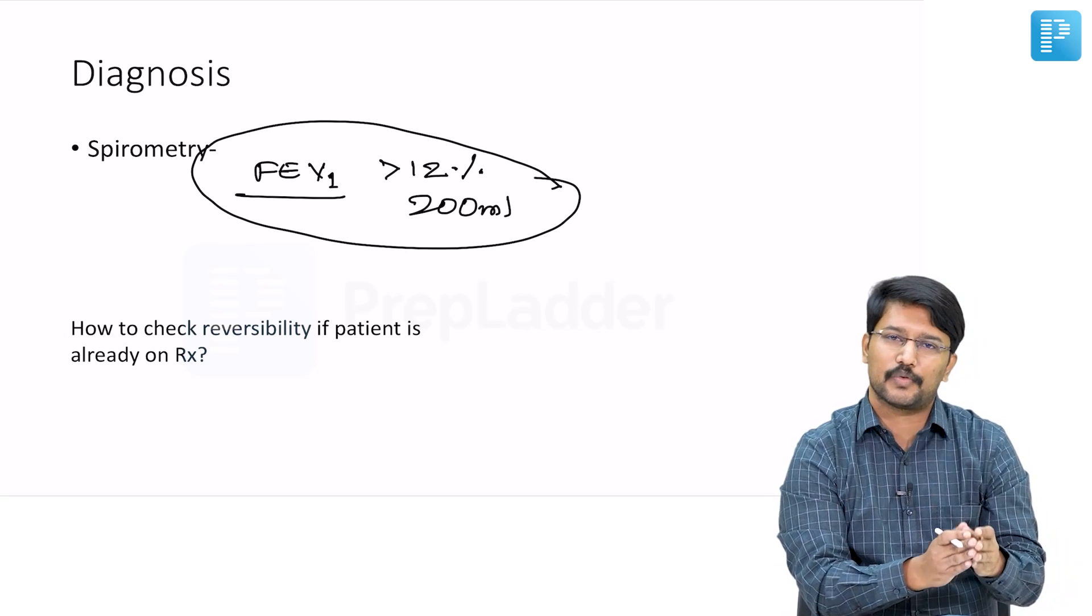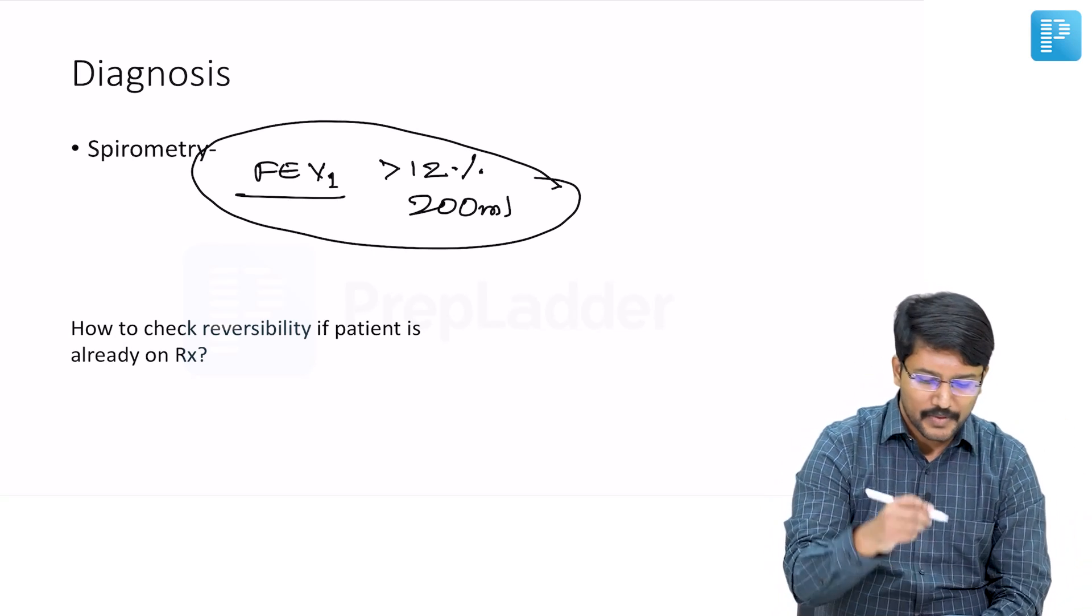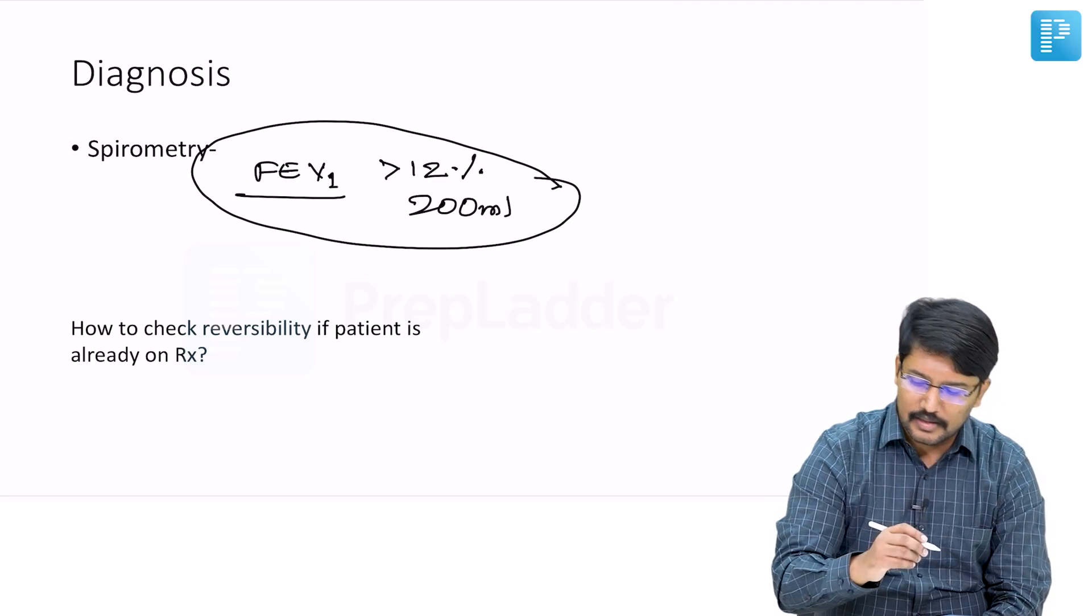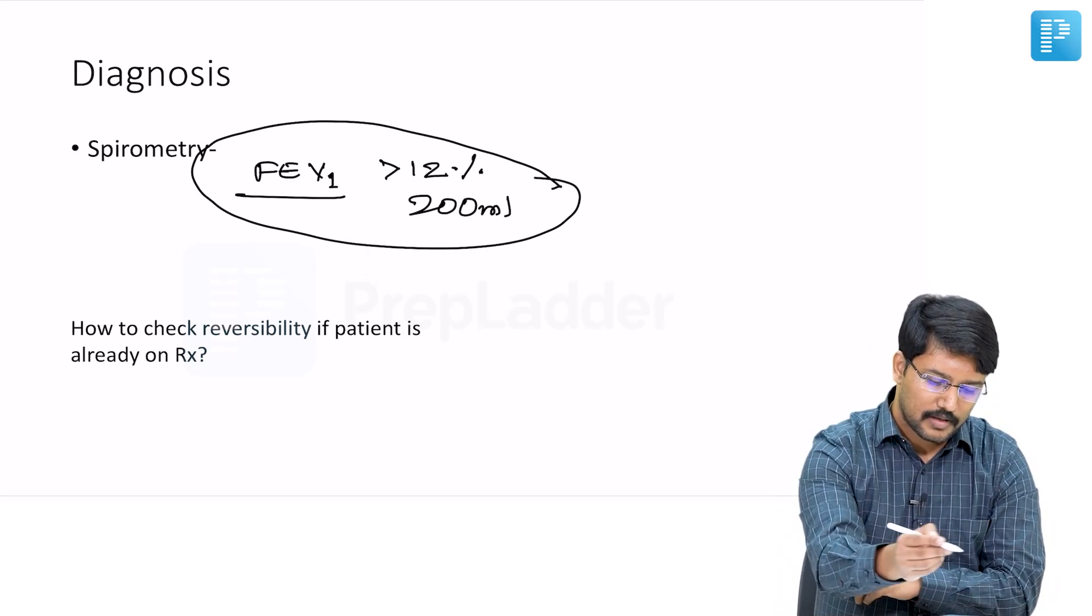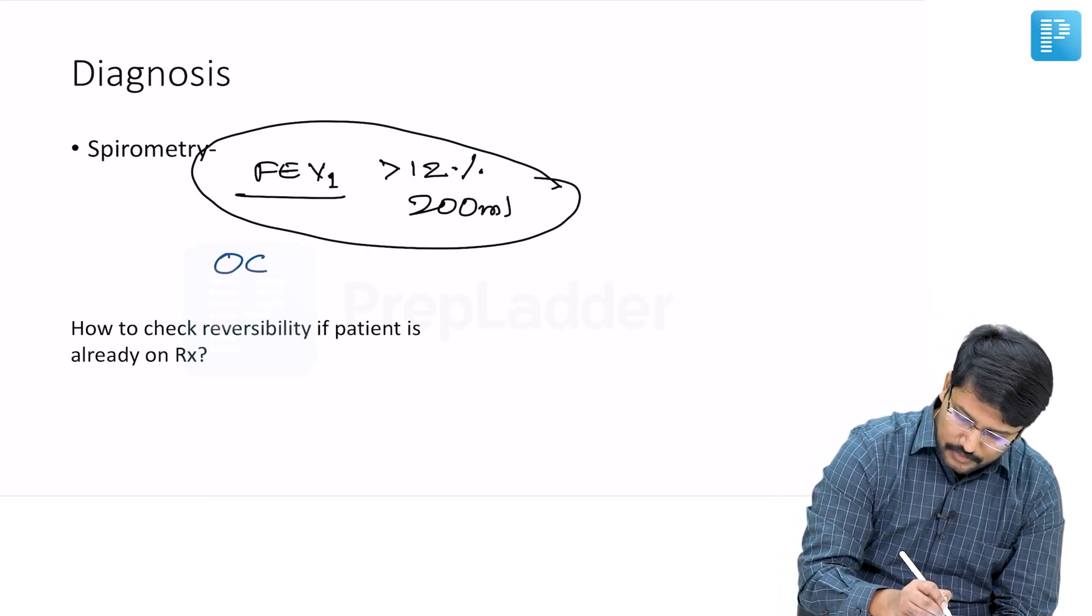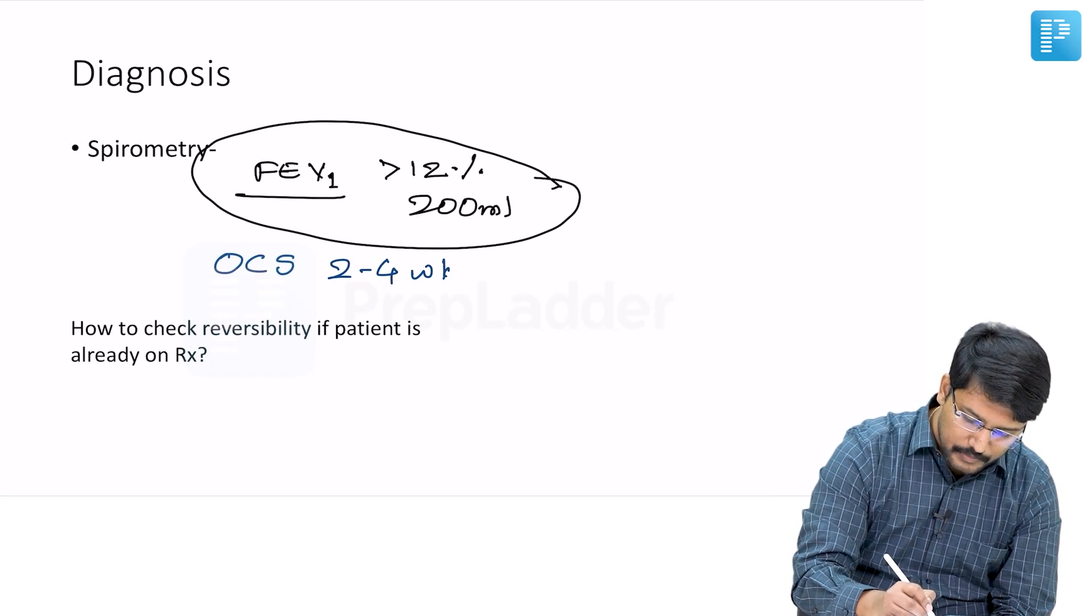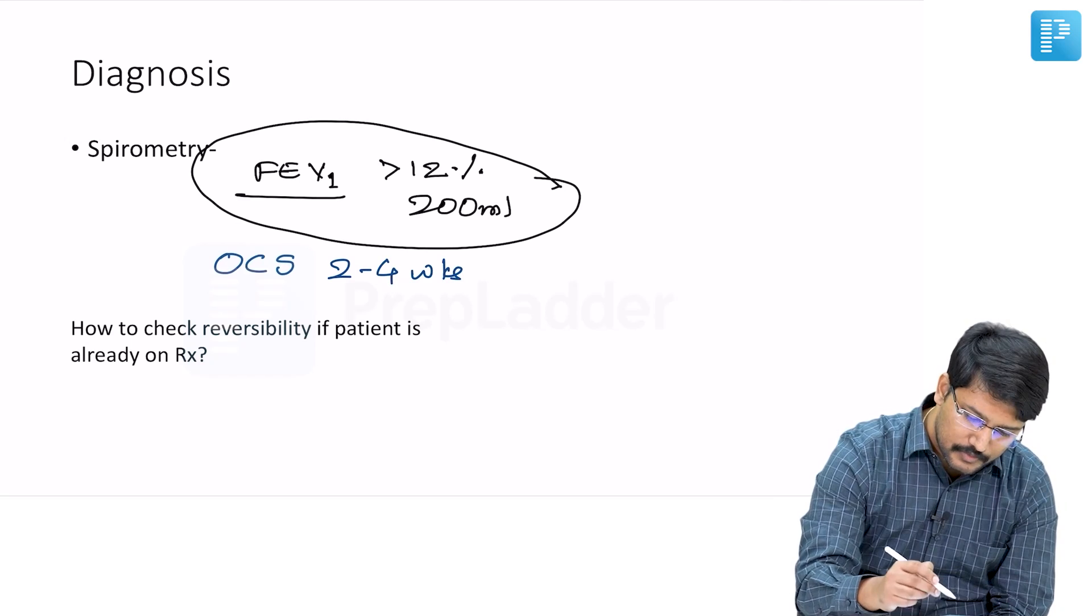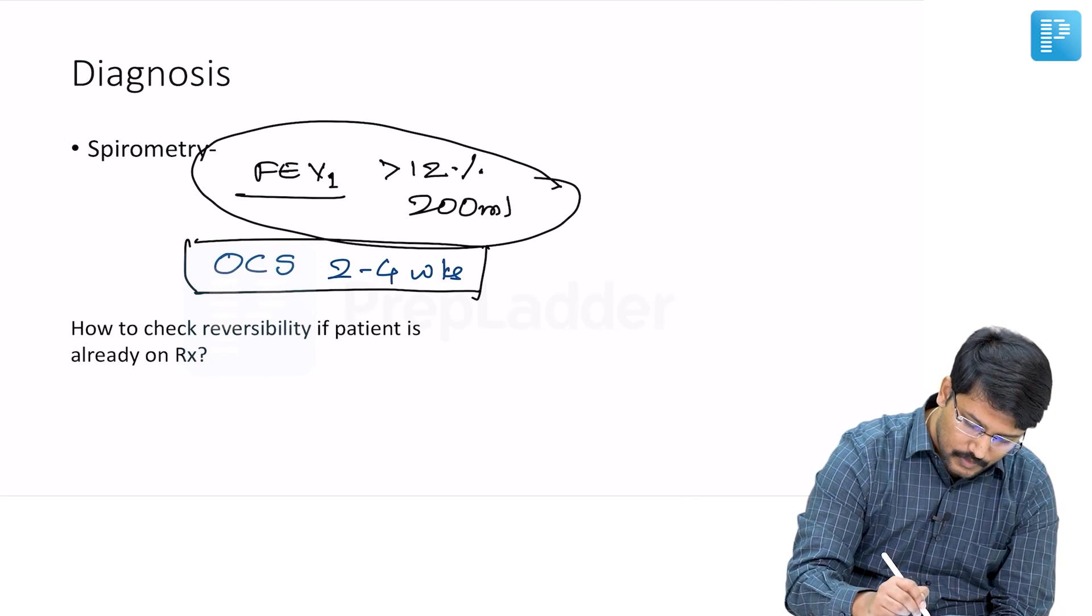They have airway hyperresponsiveness and that leans towards the diagnosis of bronchial asthma. Another way of demonstrating the bronchodilator reversibility is by giving them oral corticosteroids for 2 to 4 weeks. Again, remember an important MCQ point: 2 to 4 weeks.